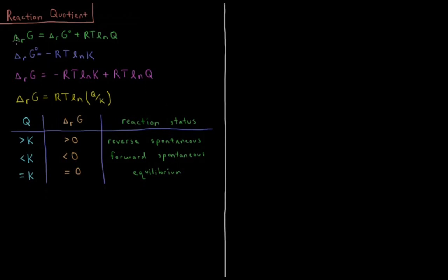We know that our Gibbs energy change of reaction is equal to the standard Gibbs energy of reaction plus the gas constant times the temperature times the natural log of the reaction quotient, where we get the reaction quotient from the pressures and the stoichiometric coefficients of our reactants and products. We also know that the standard Gibbs energy of reaction is equal to minus the gas constant times temperature times the natural log of the equilibrium constant K.